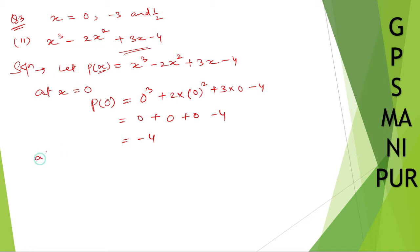Now at x equal to minus 3, p of minus 3 will be equal to minus 3 whole cube, plus 2 into minus 3 whole square, plus 3 into minus 3 minus 4. Minus 3 whole cube: 3, 3, 9, 9, 3, 27 - minus 27. Plus 2 into 3, 3, 9. But since it is square, it will be plus 9.